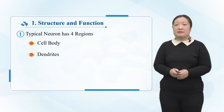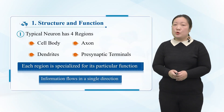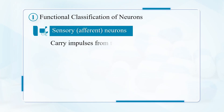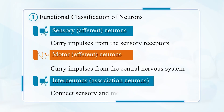The function of axons is to generate and transmit action potentials. The functional classifications of neurons are divided into three types. Firstly, sensory neurons, which carry impulses from the sensory receptors. Second, motor neurons, which carry impulses from the central nervous system. Third, interneurons, which connect sensory and motor neurons.